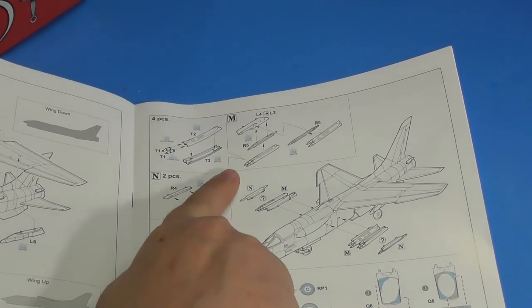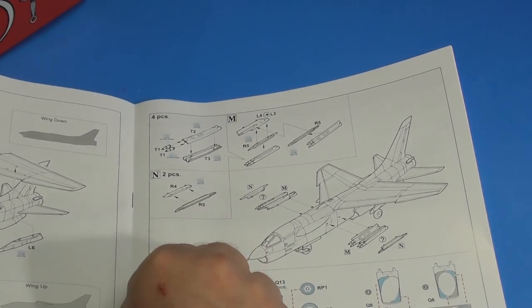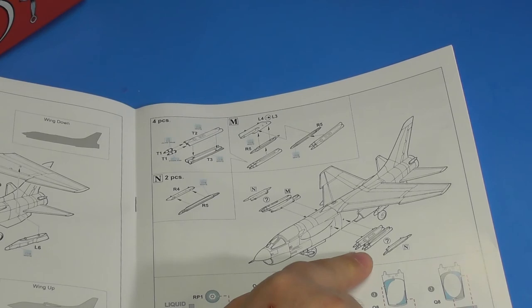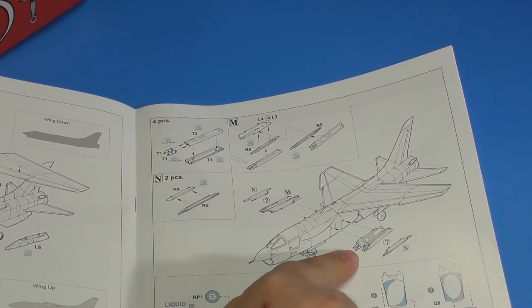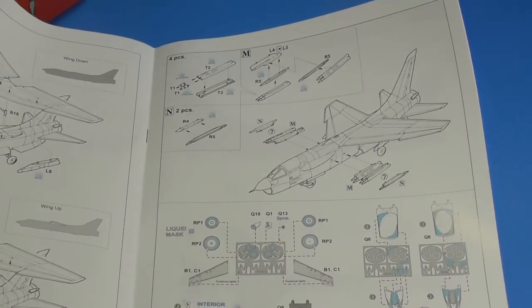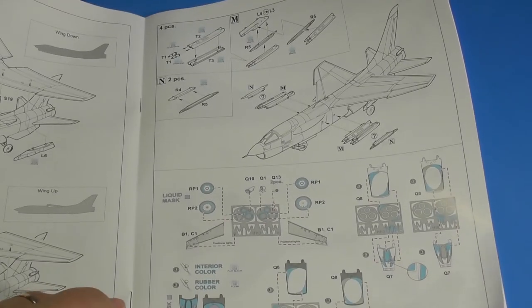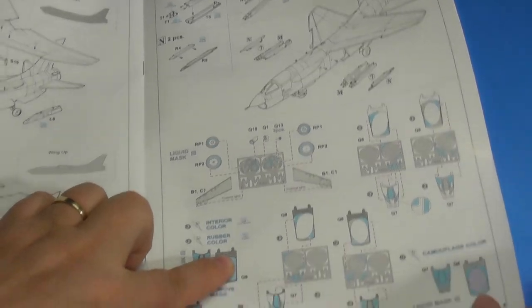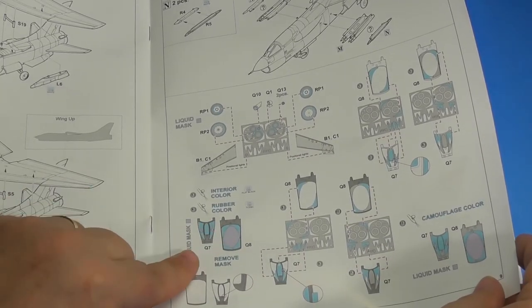No weapons but pylons. Actually maybe these are weapons. They look like some type of rocket. Don't know what kind though. Placement of the masking. You'll have to trim the edges of the masking for the canopy then fill it in with liquid mask.